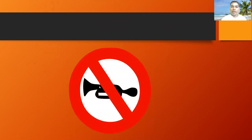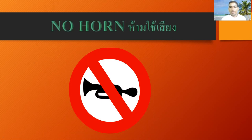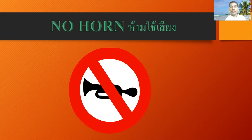Next, what sign means this? On the road, if you see this type of sign — it has red in the middle with something crossed — you will understand this sign means no horn. No horn means no beeping. If you see this type of sign, you must understand: no horn.